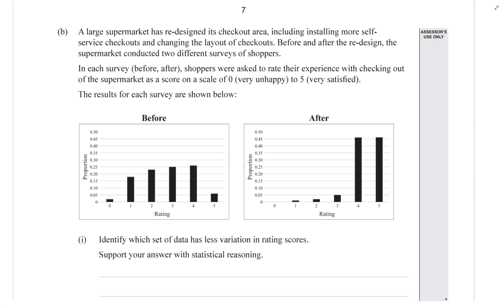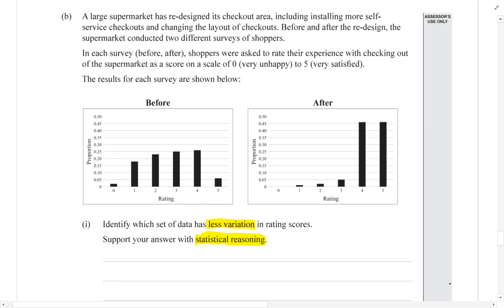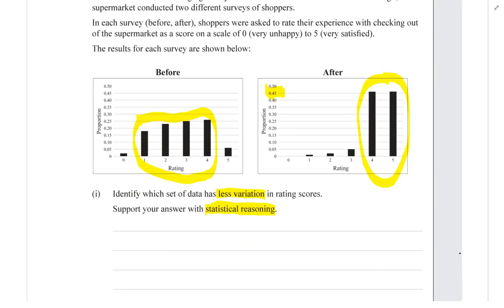Support that with statistical reasoning, which is something that we should do anyway. So when you just look at these visually, what do you notice? Well, the first thing I notice is that the after group has two really tall bars and the rest are really short, whereas the before group has four bars that are reasonably similar in height. What does the height on these graphs mean? It means the proportion of people.